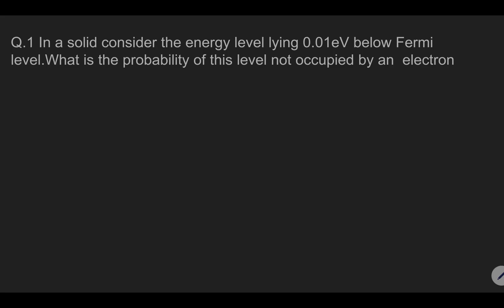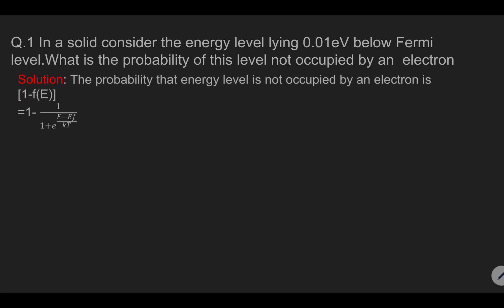On screen we will see the question where we need to find the probability that the state is not occupied by electron. The formula we are going to use is 1 minus Fe, where Fe is the probability that the state is occupied by electron. So to find the probability that the state is not occupied, we will take 1 minus Fe.